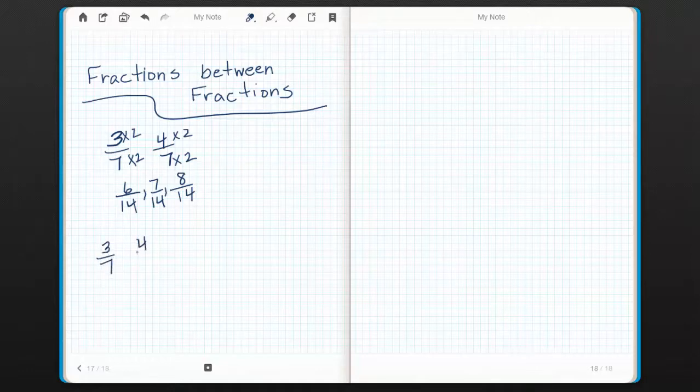If we have these same two fractions, it turns out that if you add the numerators and add the denominators, you actually do get a fraction that is between them. In fact, I got the same fraction.